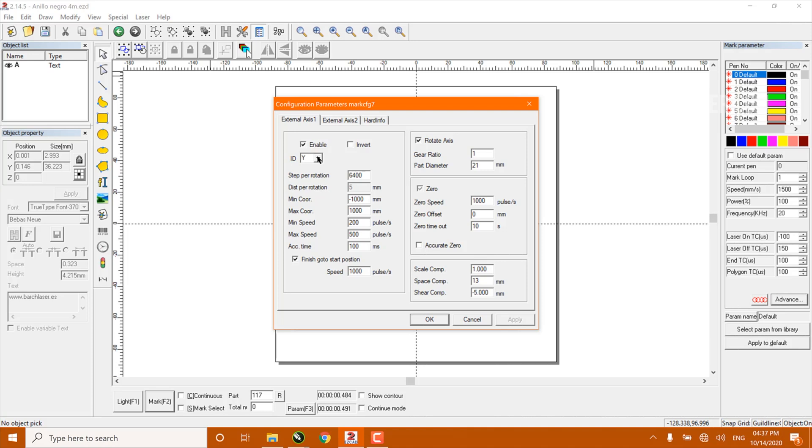If you want to learn how to configure the motor and configure the rotary engraving parameters, you can visit our page barchlaser.com. However, since everything is set up, we will only be sure that our ID has Y selected.